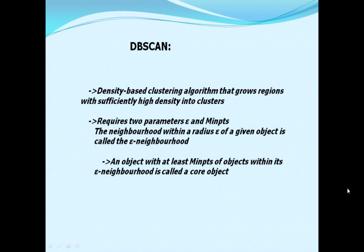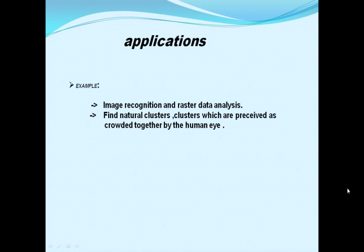Now let's look into DBSCAN — how it works and what its algorithm is. DBSCAN is a density-based clustering algorithm that grows regions with sufficiently high density into clusters. It uses two parameters: epsilon for the distance, and min points, which is the minimum number of points needed to form a cluster. An object with at least min points of objects within its epsilon neighborhood is called a core object.